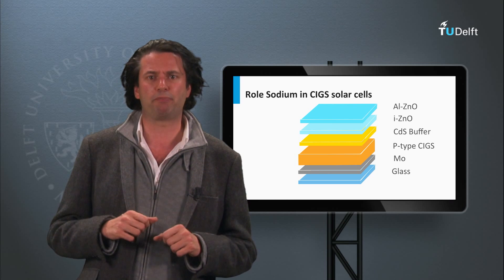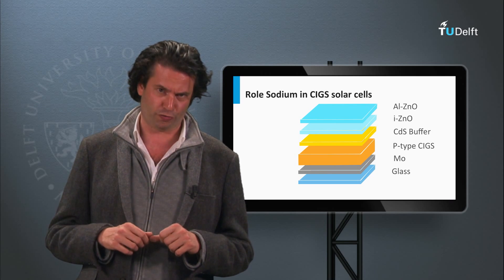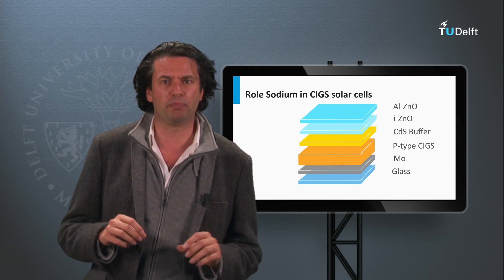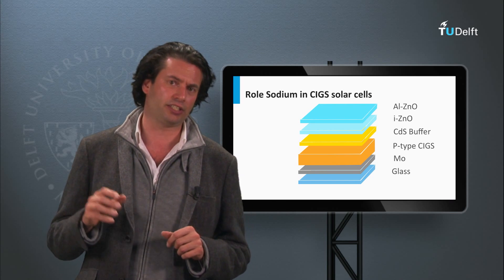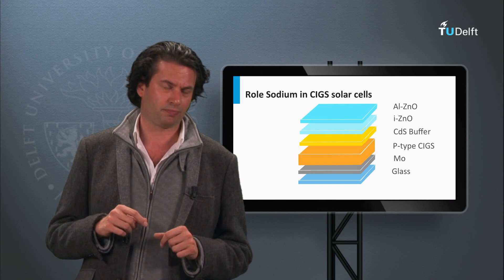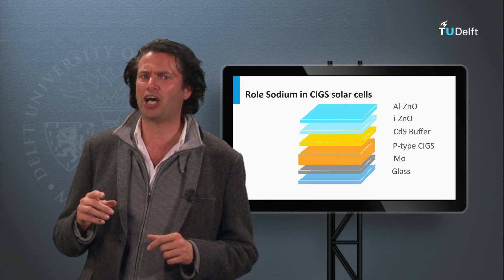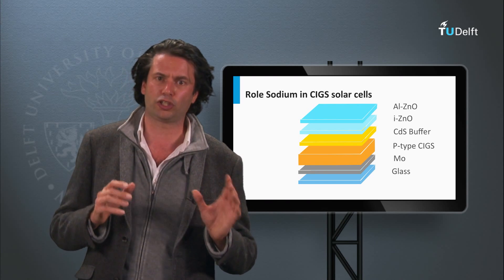This results in higher bandgap utilization and higher open-circuit voltages. Typical optimum concentration of sodium in the CIGS layers is 0.1%. The sodium source in the growth mechanism can be the soda-lime glass used as substrate.